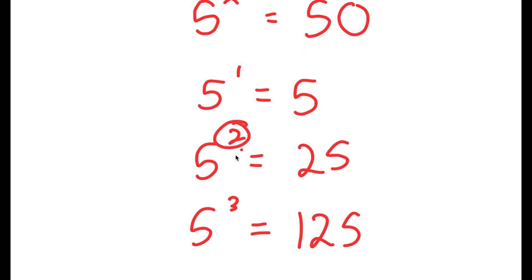So we know that the value of x is going to be somewhere in between 2 and 3, meaning it's going to be a decimal. So how are we going to find the exact value of x?